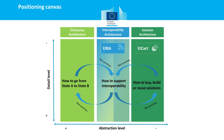This slide presents the positioning of the two work products of the EIA action — the EIRA and the EIA cart — towards other architectural development resources. On one side is the enterprise architecture discipline, which helps going from a state A to a state B. On the other side is solution architecture, which helps in deciding how to buy, build, or reuse solutions. The EIRA sits in the middle, helping cross the gap from enterprise architecture to solution architecture by identifying the correct building blocks needed for interoperability. The EIA cart is on the solution architecture side, helping find concrete existing solutions to design a solution architecture.